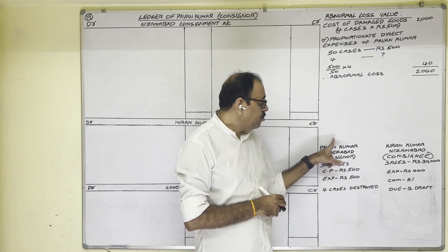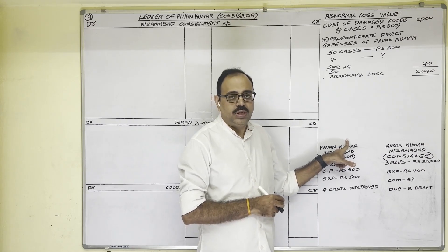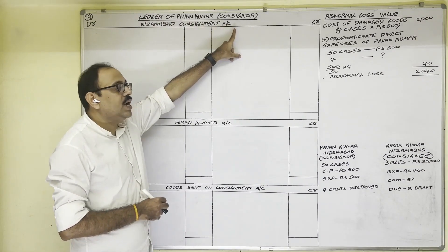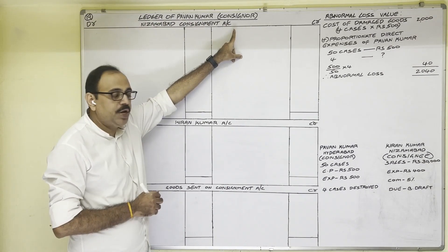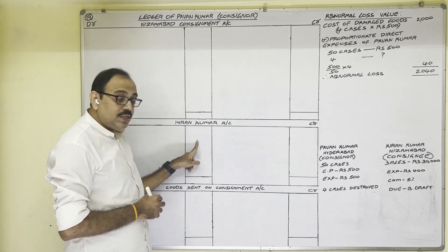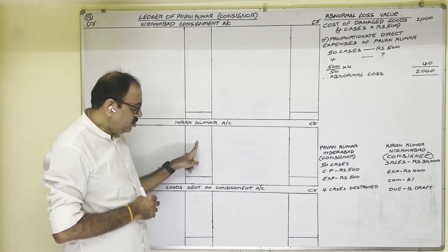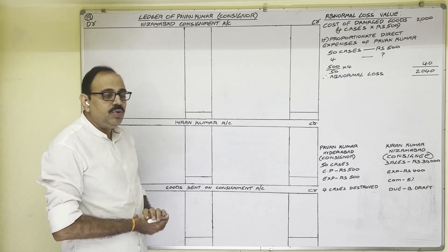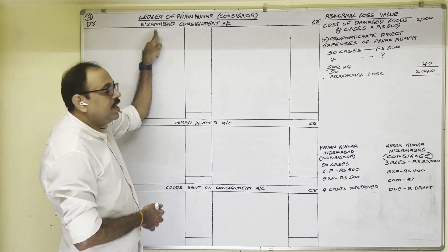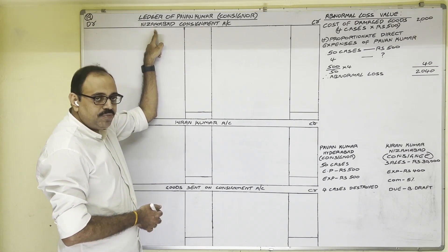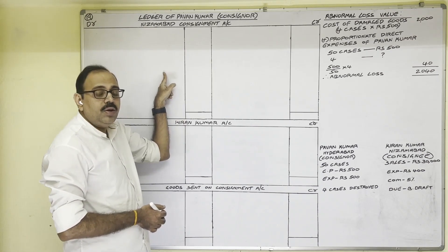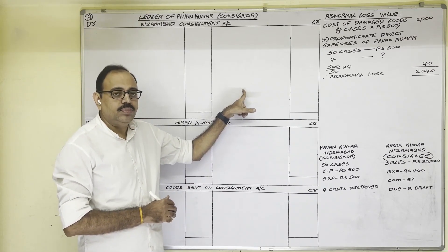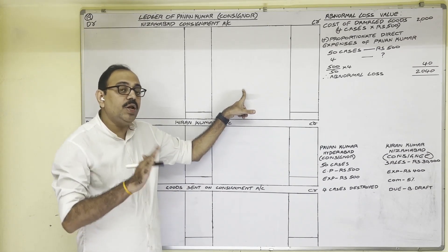The question is asking for the ledger in Pavan Kumar's books, i.e., the consignor's books. So the heading is: Ledger of Pavan Kumar. Three accounts we have to prepare: first, the Consignment to Nizamabad Account; second, Kiran Kumar Account (the consignee); and third, Goods Sent on Consignment Account. The consignment account is a nominal account, so while preparing it we should follow the nominal account rule: debit all expenses and losses, credit all incomes and gains.